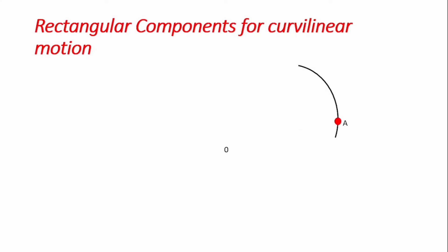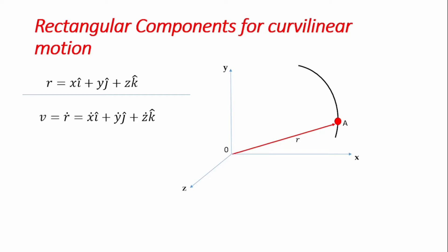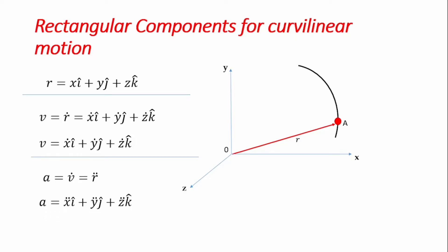In summary, for a particle in a curved path with position vector r as a function of x, y, and z in the Cartesian coordinate system: velocity is the time derivative of r, so v = ṙ = ẋ + ẏ + ż in their respective directions. Acceleration is the rate of change of velocity with time — also the second derivative of the position vector — so a = ẍ + ÿ + z̈, where ẍ represents the second derivative of x with respect to time, and so on.